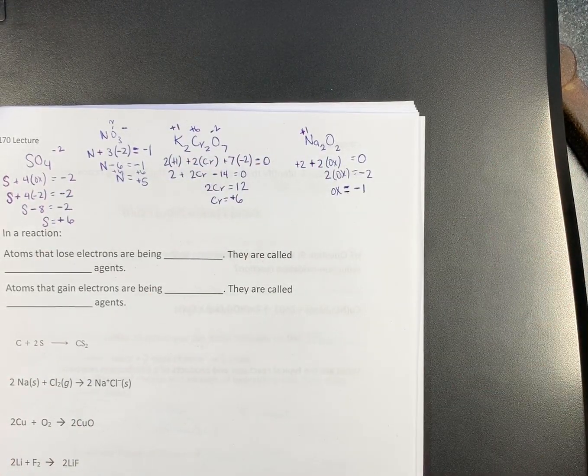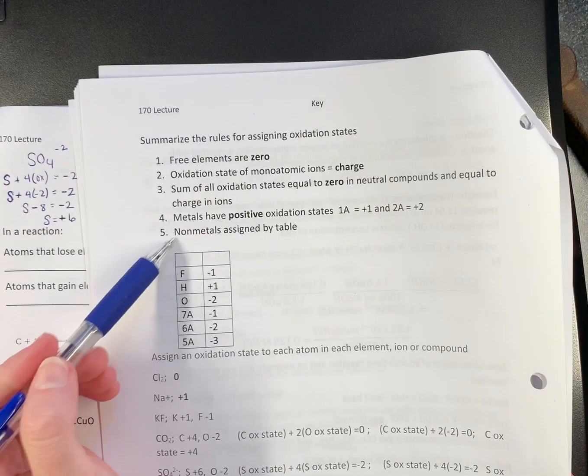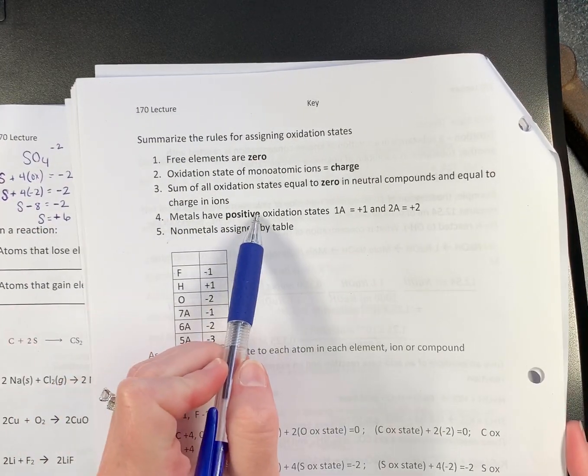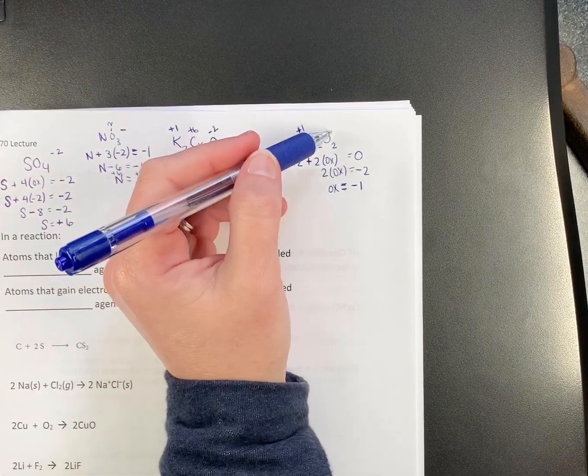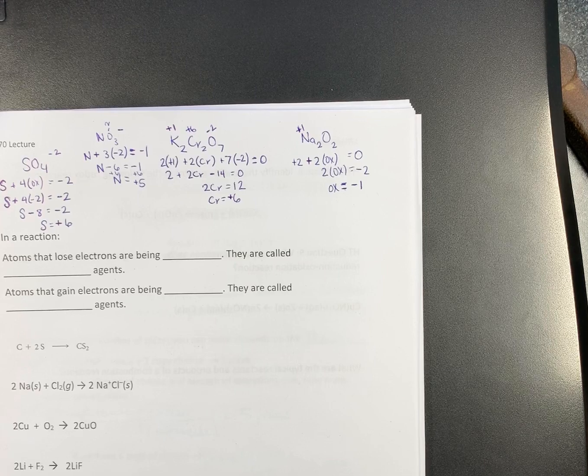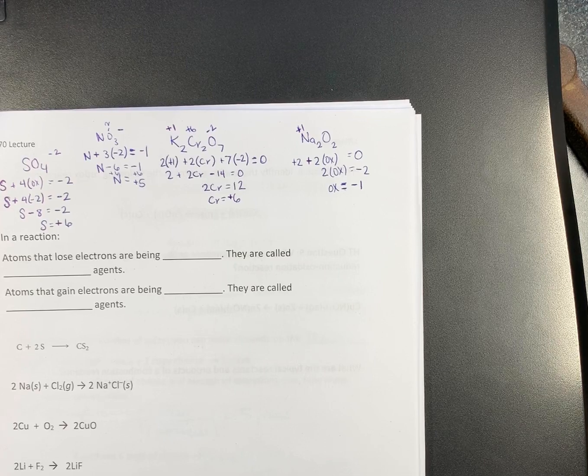So that's why non-metals, you do those last. We had to do the metal first because if we had said oxygen's negative 2, sodium can't possibly be positive 2. Not going to happen.